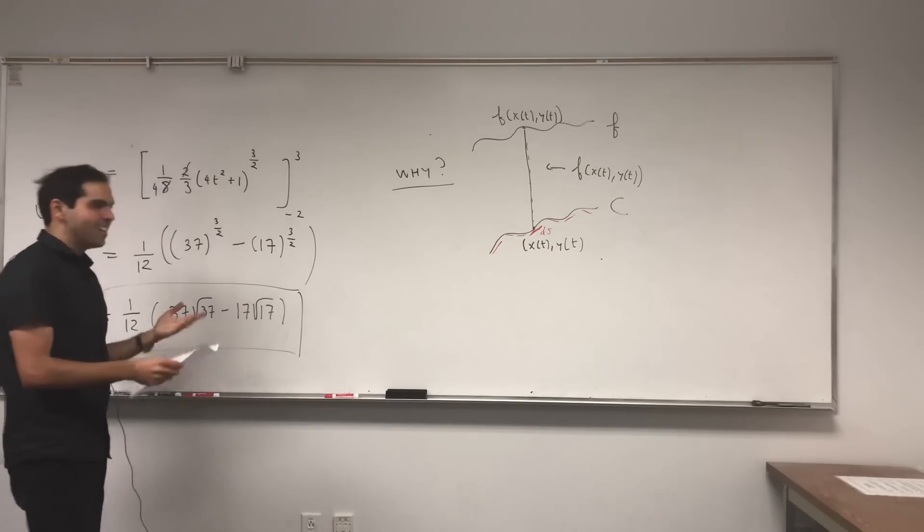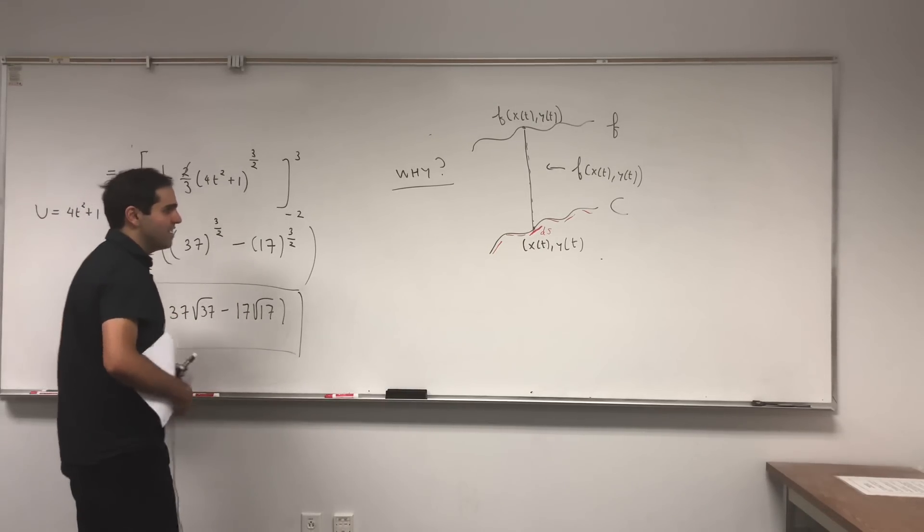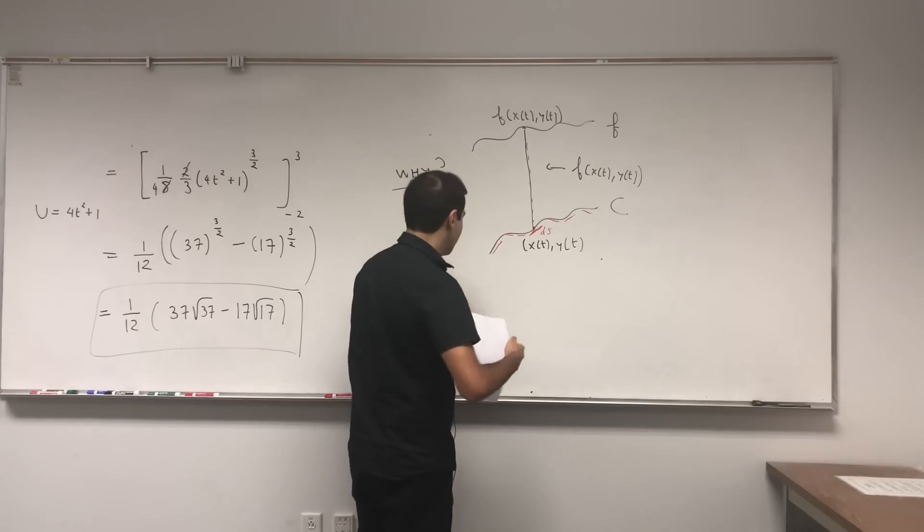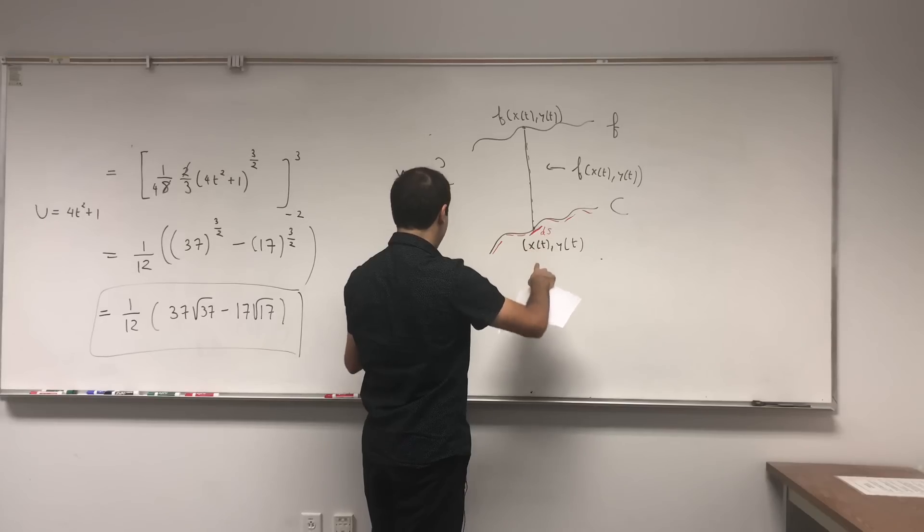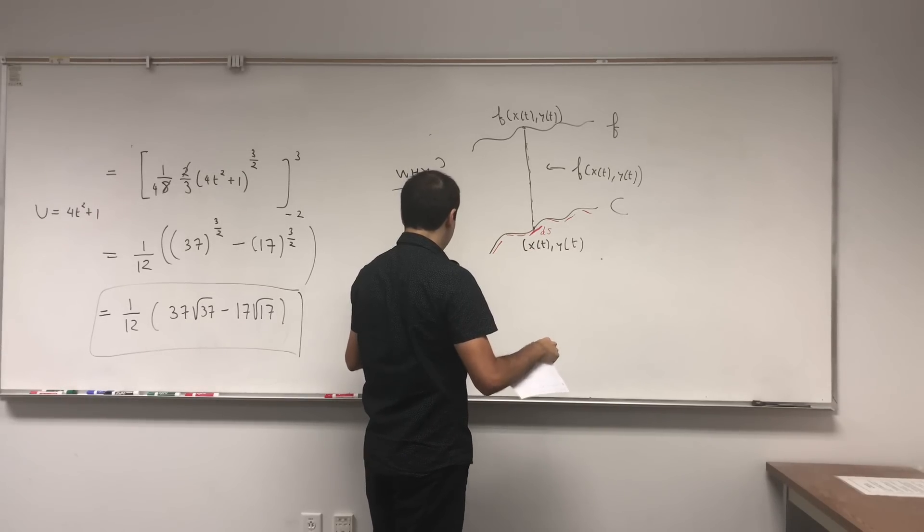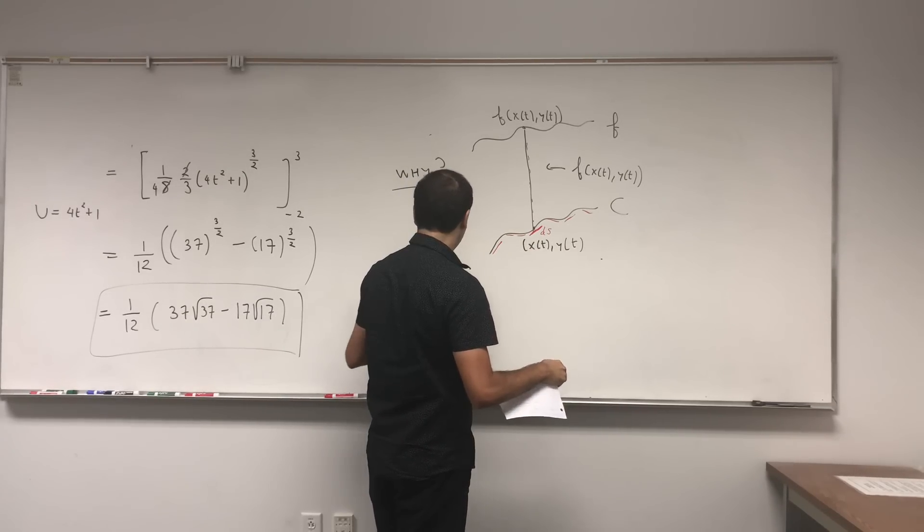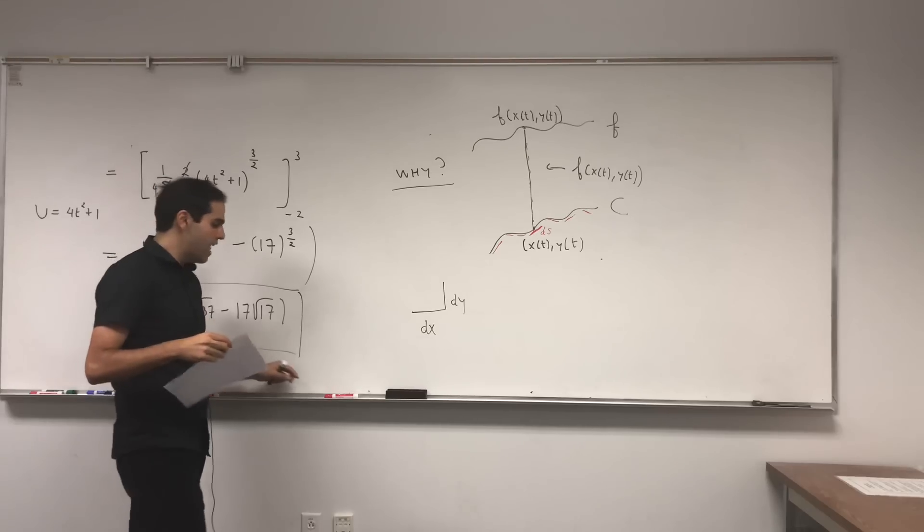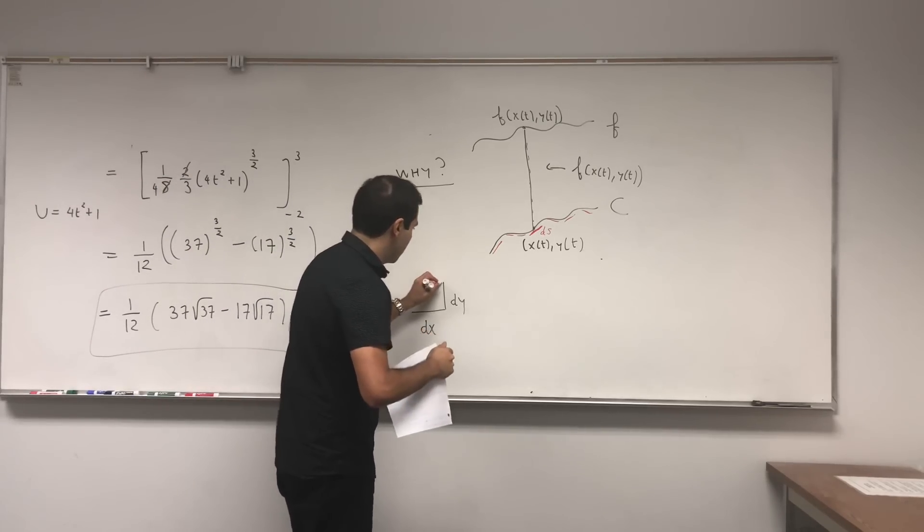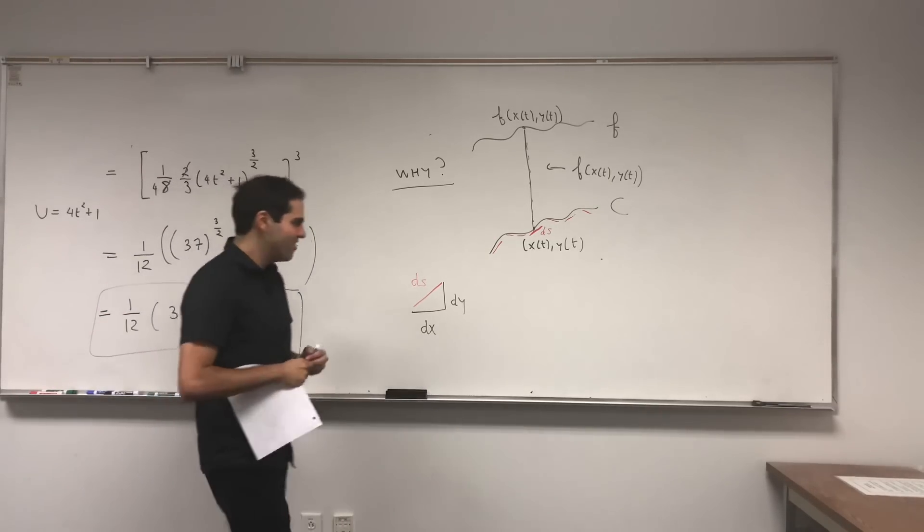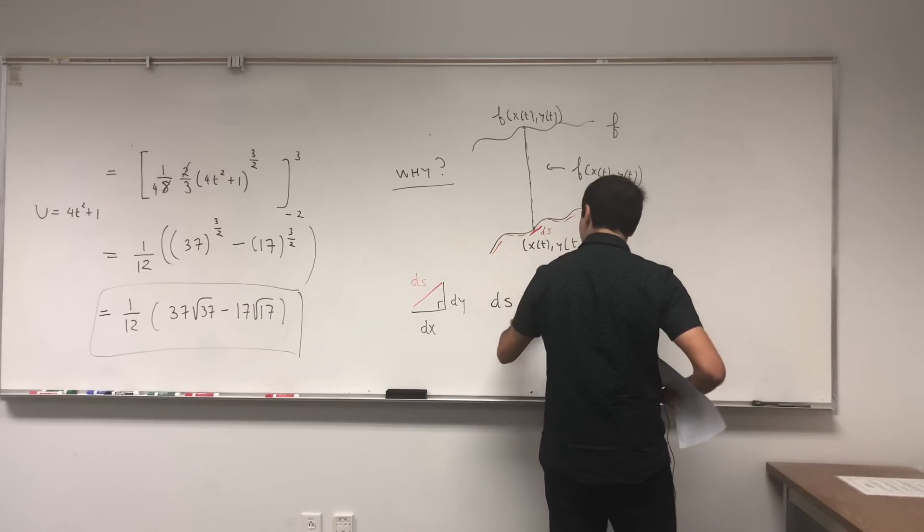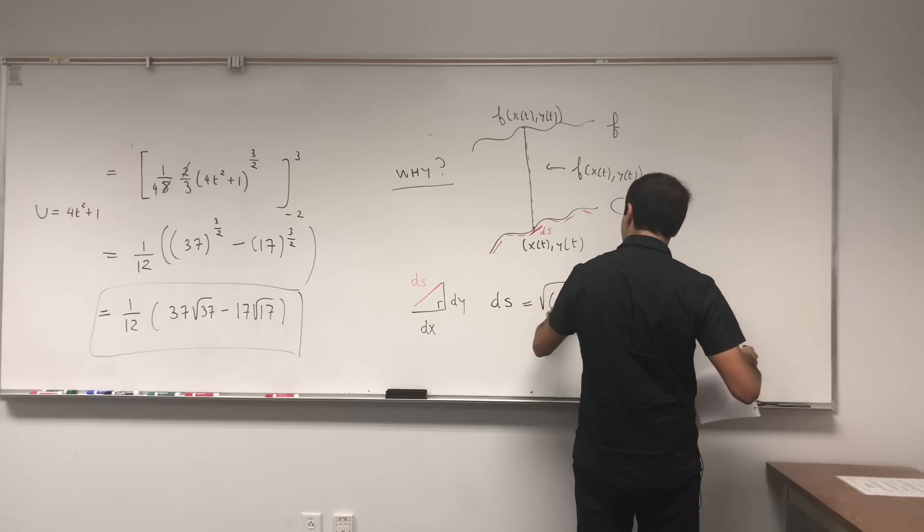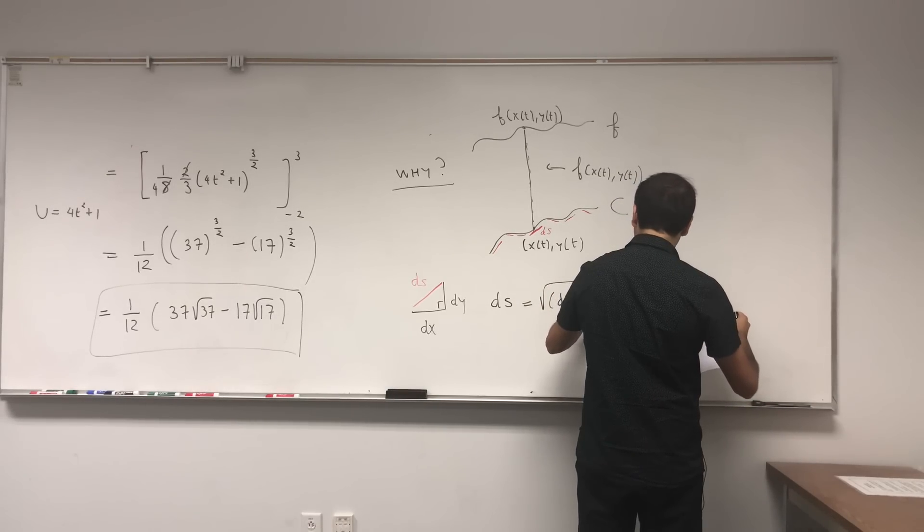And of course, the next question is, what is dS? Well, look, dS, what it is, you have a small change of x and a small change of y, let's say dx and dy, and dS is basically the length of the diagonal.